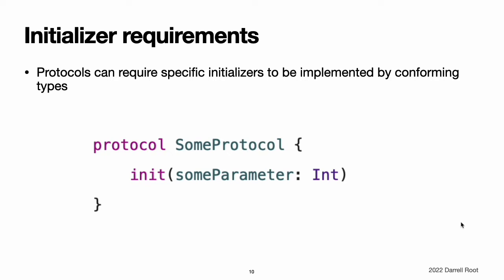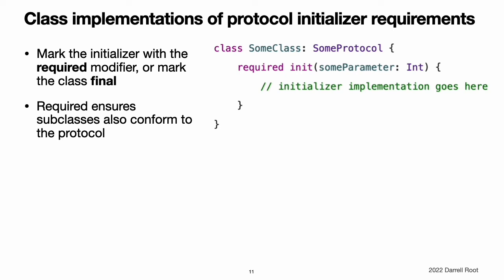Initializer requirements. Protocols can require specific initializers to be implemented by conforming types. You write these initializers as part of the protocol's definition in exactly the same way as for normal initializers, but without the curly braces or an initializer body. You can implement a protocol initializer requirement on a conforming class as either a designated initializer or a convenience initializer. In both cases, you must mark the initializer implementation with the required modifier. The use of the required modifier ensures that you provide an explicit or inherited implementation of the initializer requirement on all subclasses of the conforming class. Note: you do not need to mark protocol initializer implementations with the required modifier on classes that are marked with the final modifier, because final classes cannot be subclassed.